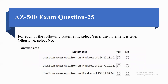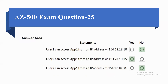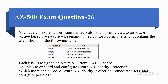For each of the following statements, select Yes if the statement is true, otherwise select No. Statement 1: User 1 can access F1 from an IP address of 154.12.18.10. Statement 2: User 2 can access F1 from an IP address of 193.77.10.50. Statement 3: User 2 can access F1 from an IP address of 154.12.18.34. The first and third statements are false, while the second statement — User 2 can access F1 from 193.77.10.15 — is true.